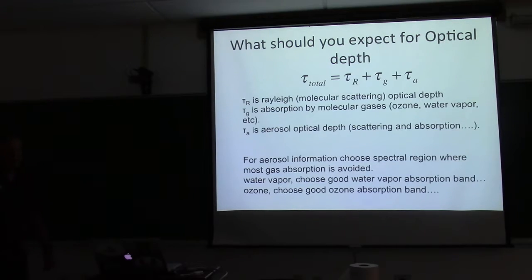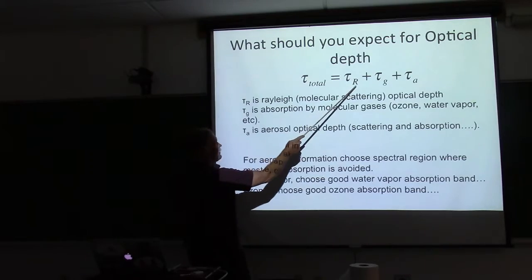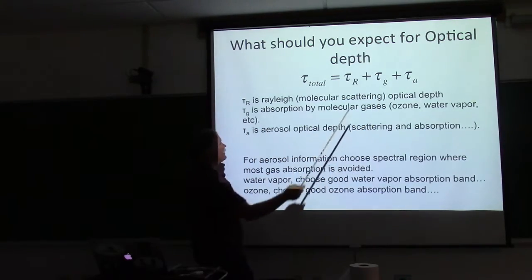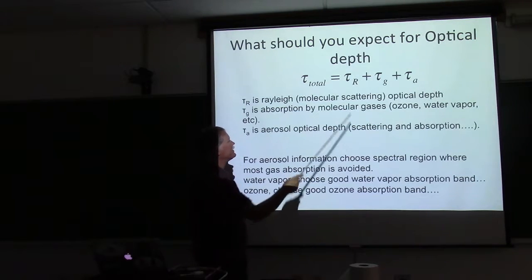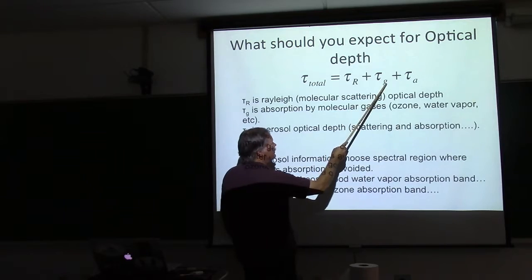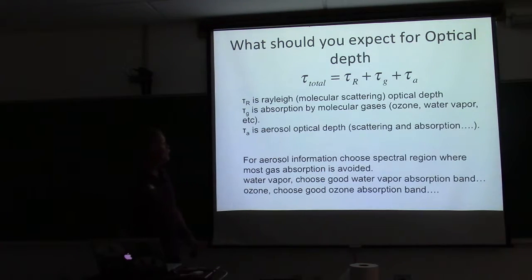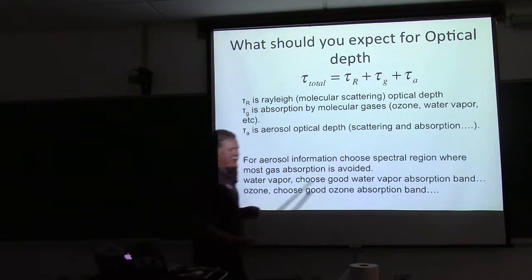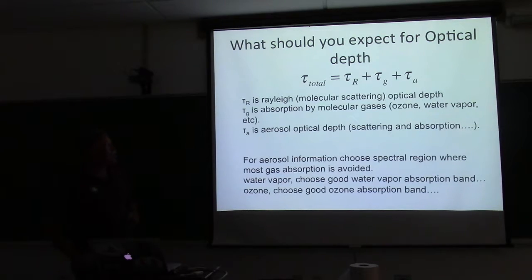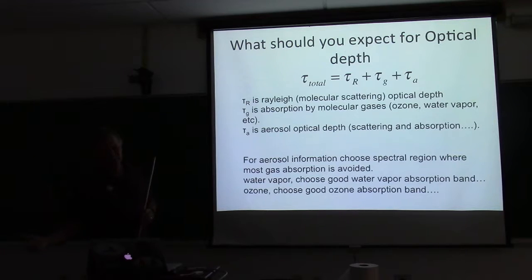The optical depth we've been measuring — that Jason reported the other day — is the total optical depth. That's composed of the Rayleigh optical depth plus gas absorption plus aerosol optical depth. Rayleigh is molecular and very well known. Gas absorption includes things like ozone and water vapor, which you try to avoid unless you're trying to measure that gas. The residual between these two things is the aerosol optical depth, and aerosols are highly variable — that's usually what we're trying to get at with sun photometry.